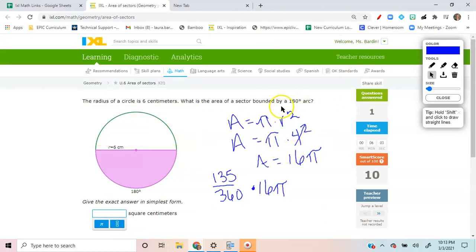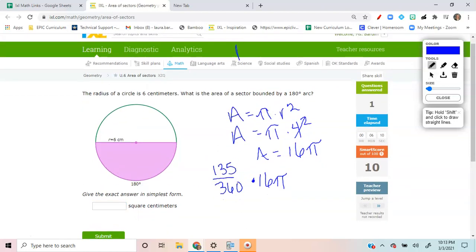So as you continue to work on U6, remember what we talked about. Part over whole. You've learned that since middle school. Times the area. Keep your answer in terms of pi.